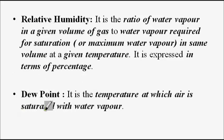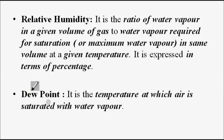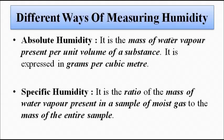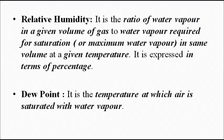Dew point is the temperature at which saturation of the gas or substance takes place with water vapor — the temperature at which the water vapor content in the substance becomes maximum. To summarize: absolute humidity is mass per unit volume; specific humidity is mass of water vapor to total mass; relative humidity is current water vapor to maximum holding capacity at a given temperature; and dew point is the temperature at which saturation occurs.